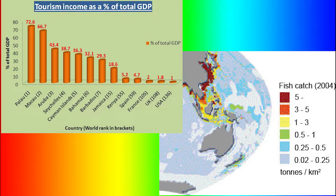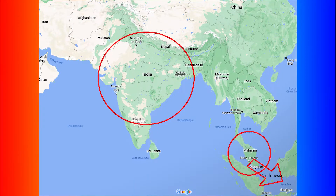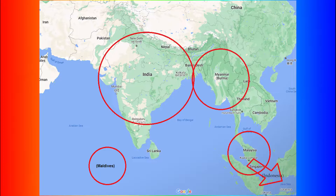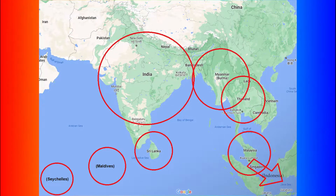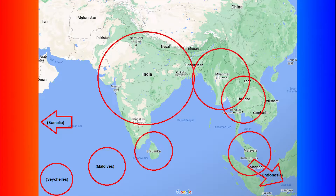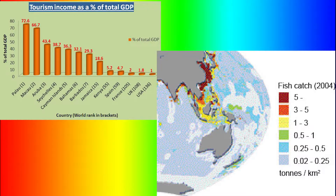The earthquake and tsunami heavily affected the economy in countries such as India, Indonesia, Malaysia, Maldives, Myanmar, Sri Lanka, Seychelles, Thailand, and Somalia. The two main occupations affected were fishing and tourism.